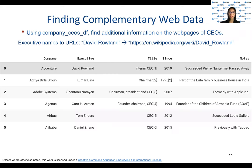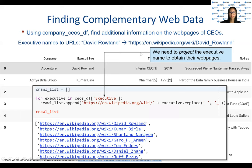Observe that the executive names in the data frame we created can be appended onto the HTTP address for Wikipedia to obtain the web pages of CEOs. This is where additional information, such as date of birth, may be found. We will therefore extract the names of the CEOs using projection, which essentially subsets the data by column. Projection is written like this, and it yields a list of strings of executive names.